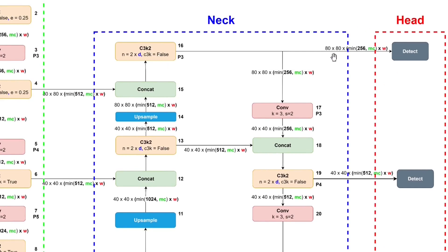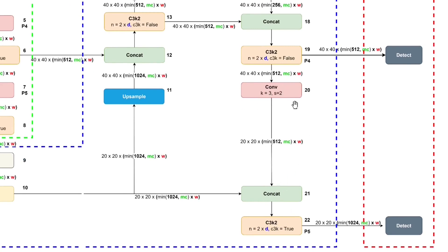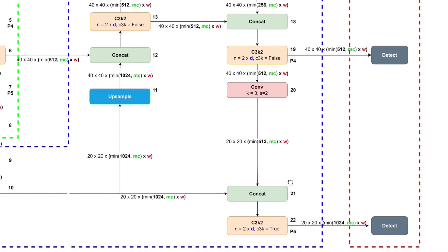The following C3K2 block's feature map is used as input for the detect block — this block is specialized for detecting small objects relative to the image or video frame size. Its output is also used as input to a convolutional block with kernel size 3 and stride 2. Concat then combines that convolutional block's feature map with the next C3K2 block's feature map. That C3K2 block feeds into the detect block specialized for detecting medium-sized objects. Its output also feeds a convolutional block, after which concat combines it with the C2PSA block's feature map. Finally, one more C3K2 block feeds the detect block specialized for detecting large objects.